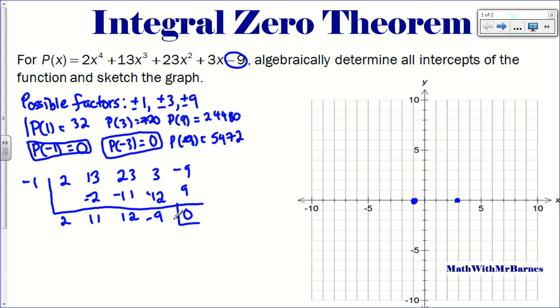Let me just recap that. I bring down my 2. Negative 1 times 2 is negative 2. Add 13 plus negative 2 is 11. Negative 1 times 11 is negative 11. 23 plus negative 11 is 12. Multiply, that gives negative 12. Add negative 9, multiply as positive 9. We should get 0 here because of the factor theorem. If I plug in negative 1 into this, it's a factor. If I divide, I get 0.